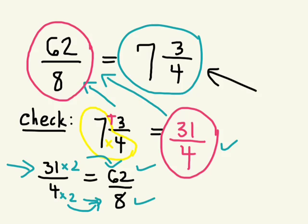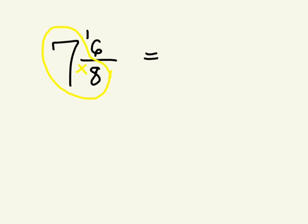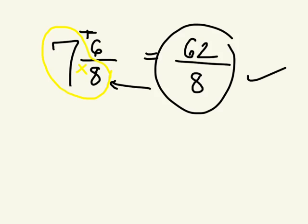If we look at the first answer we got that wasn't in lowest terms, let's look at that one. So originally we had 7 and 6 eighths before we reduced it. Well, let's check to see if this is equal to 62 over 8. So once again, we're going to multiply the denominator by the whole number. And what's 7 times 8? 56 plus 6. What's 56 plus 6? 62. 62.